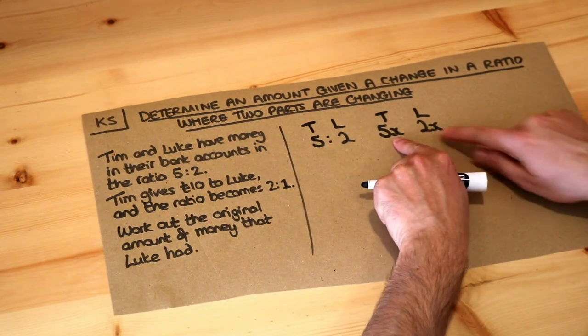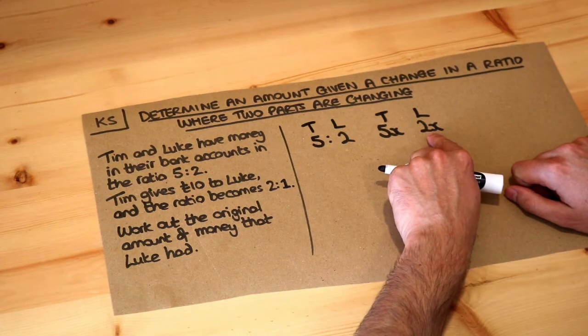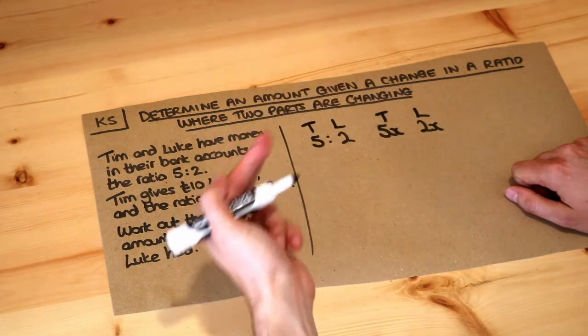What if x was 2? If x was 2 then Tim would have 10 pounds and Luke would have 4 pounds. That's still in the ratio 5 to 2.